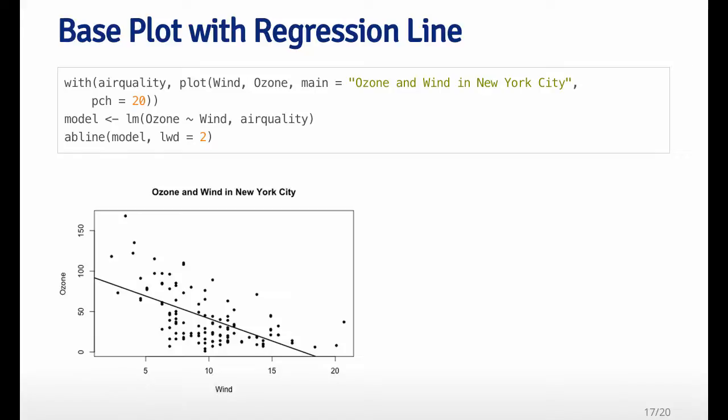And then I fit a linear model to the data, which is using the LM function. And then I just call the AB line function, which is another annotation function. And I just pass it the linear model object, and I specify LWD equals 2, which is a thicker line than the typical default line. So AB line can interpret the regression model output and plot a line, plot with a given intercept and slope. So here you can see I've added the regression line to the plot, and so you can see the downward trend.